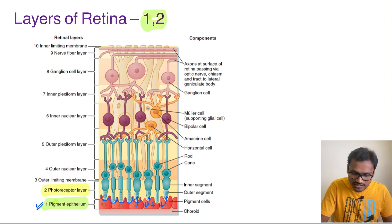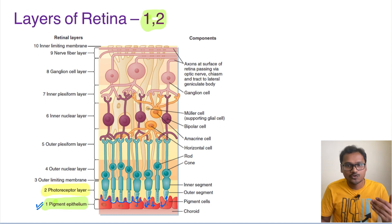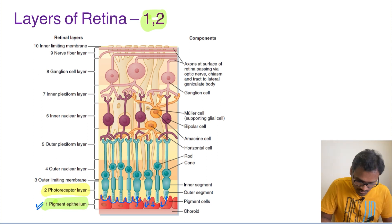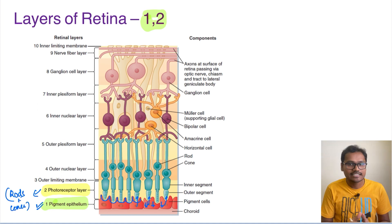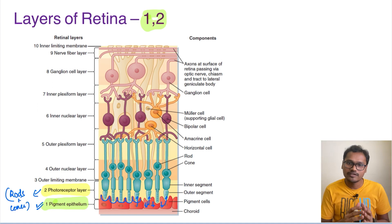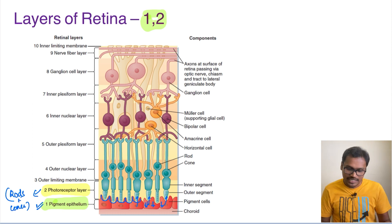The pigment epithelium also constantly provides nutrients such as vitamin A to the photoreceptors. Additionally, whenever rods or cones undergo phagocytosis, that phagocytosed material is taken up by the pigment epithelium. So the pigment epithelium is the complete protective gear for the photoreceptor layer. The second and most important layer is the photoreceptor layer itself, which consists of both rods and cones. Their structure will be discussed in detail during the photochemistry of vision video.